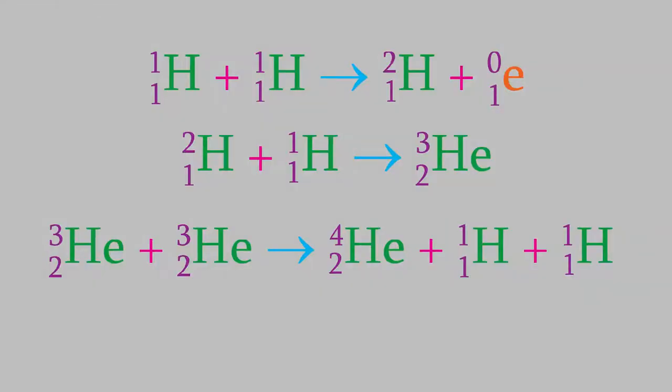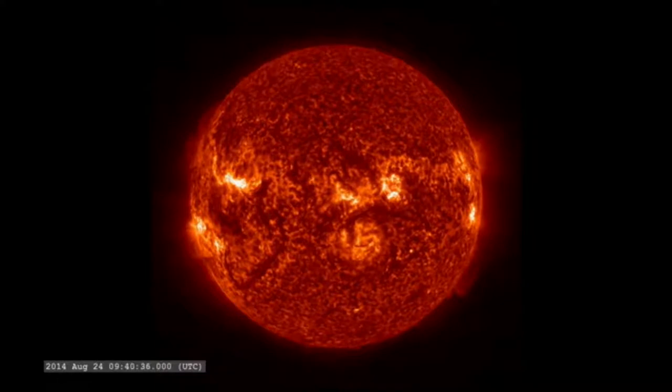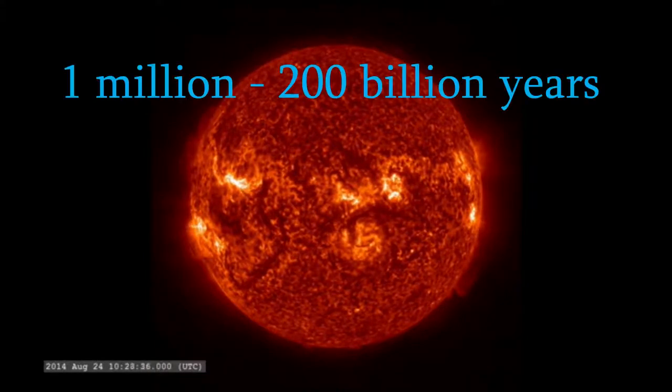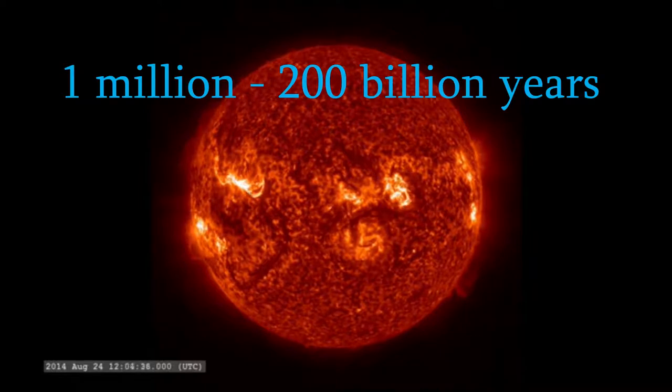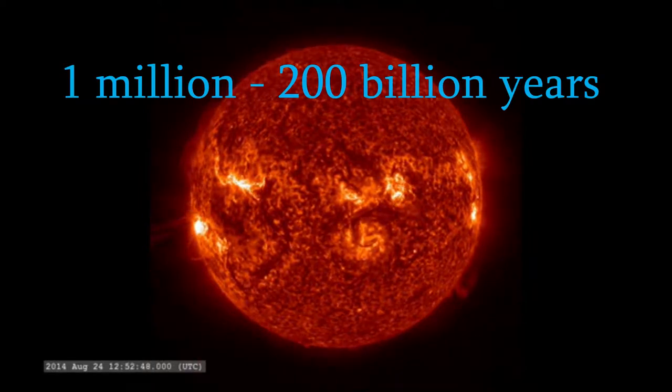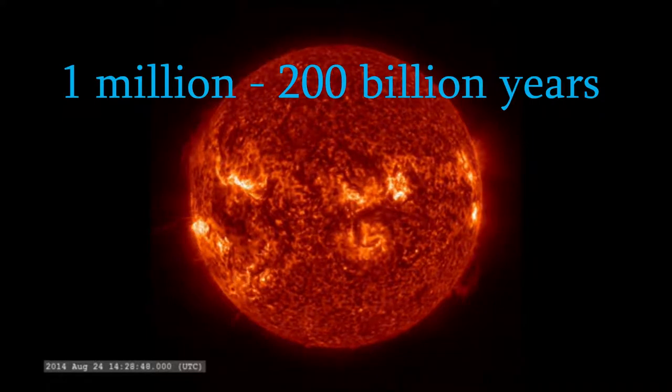Almost all the light and heat of the Sun results from trillions of these reactions happening every second. Like most fusion reactions, each of these produces a large amount of energy, especially the third one, which produces about 1.24 billion kilojoules per mole. That's an immense amount of energy. Stars like our Sun will continue to perform these reactions for between 1 million and 200 billion years. The heavier the star, the shorter its life will be. Our Sun will probably continue these reactions for about another 5.5 billion years.